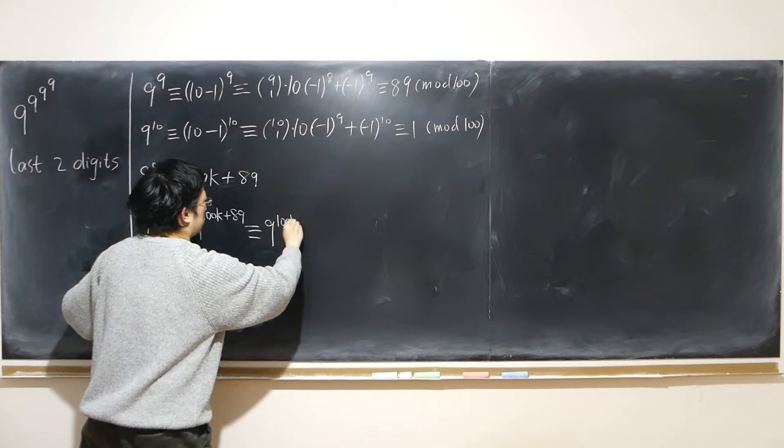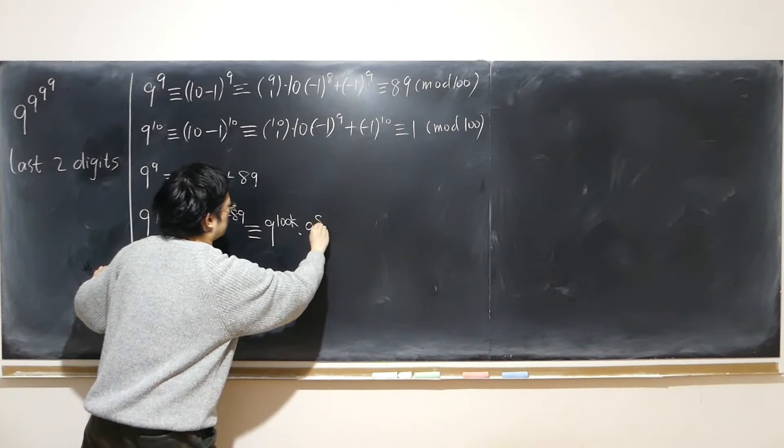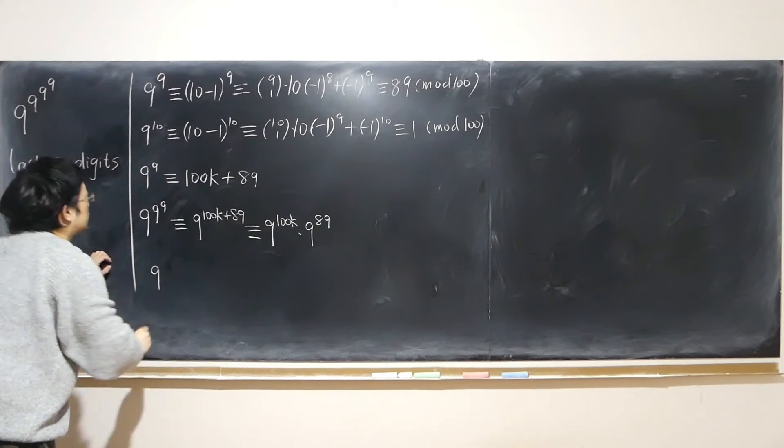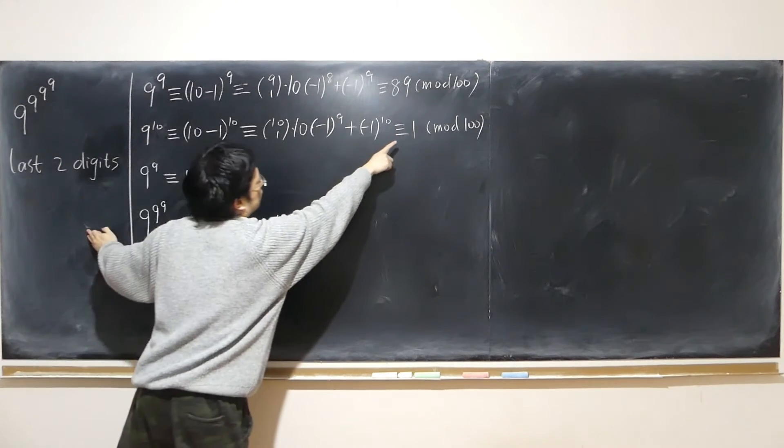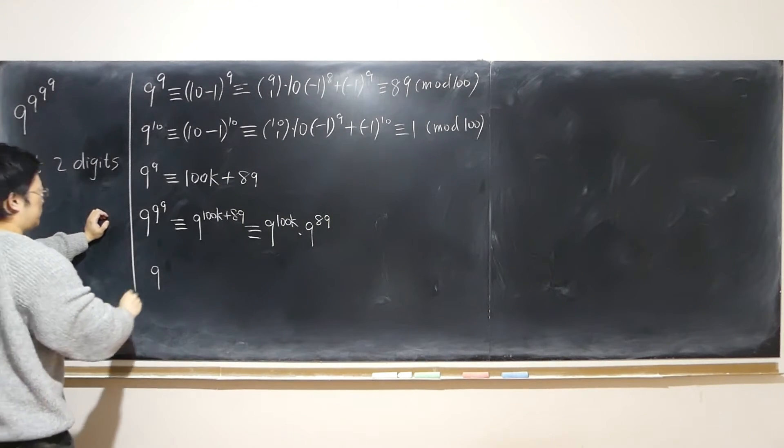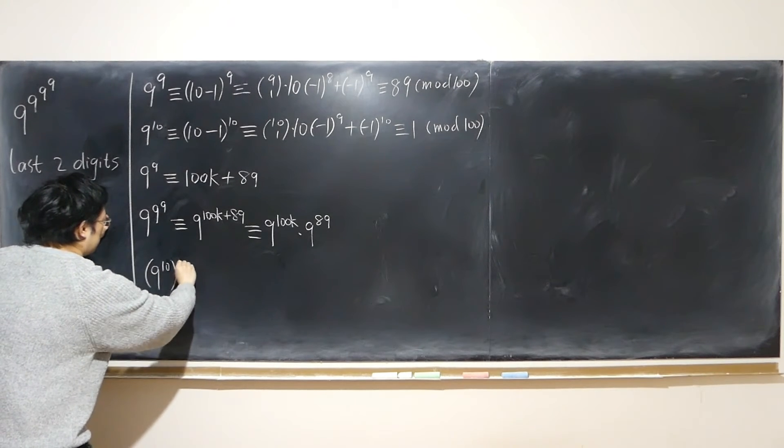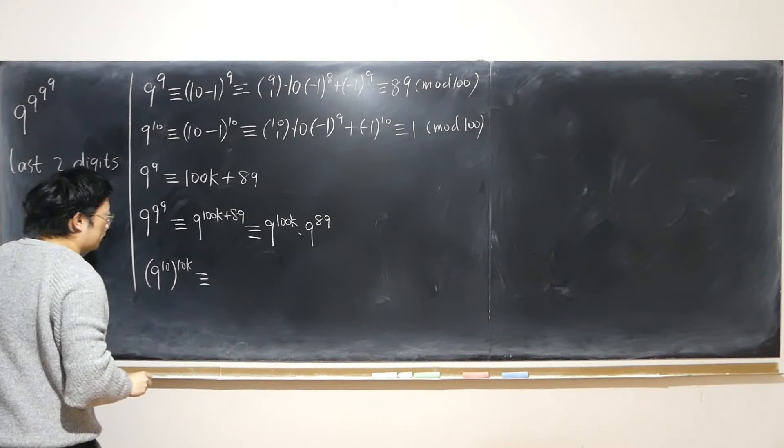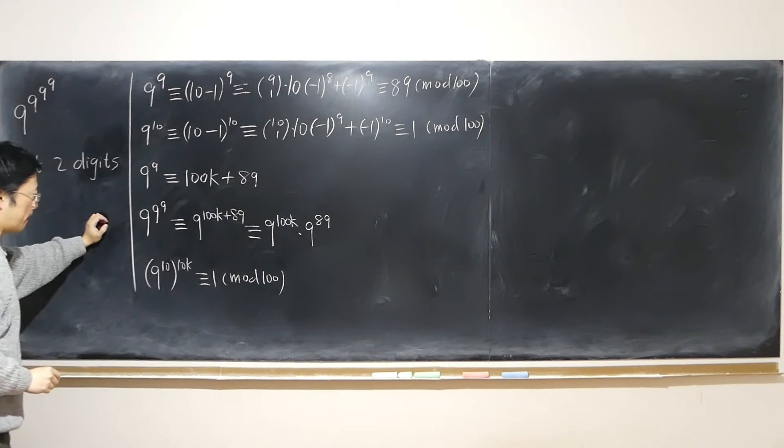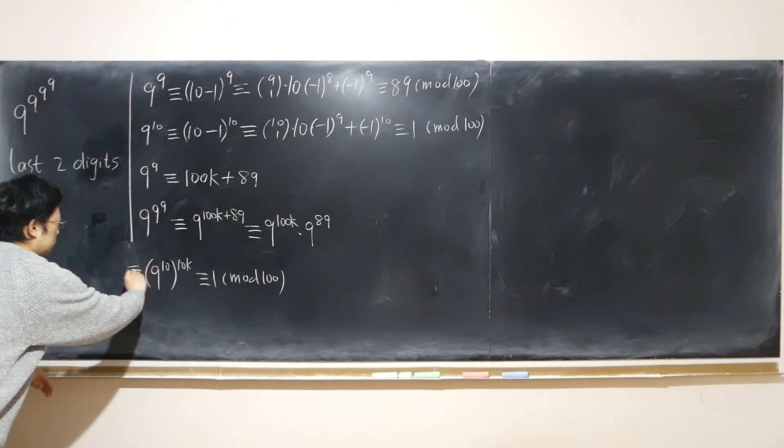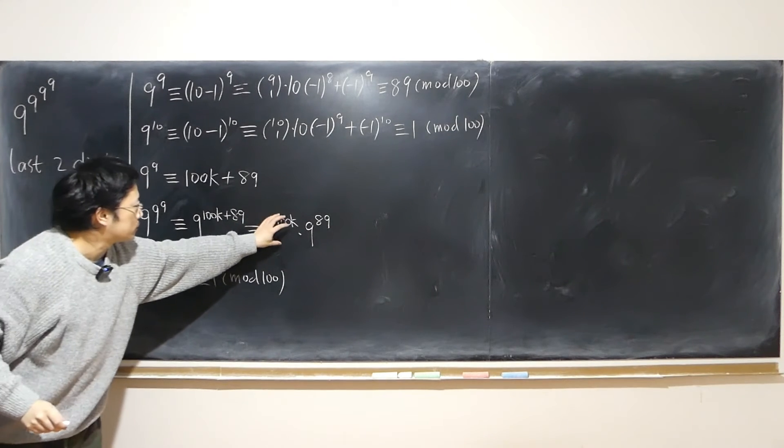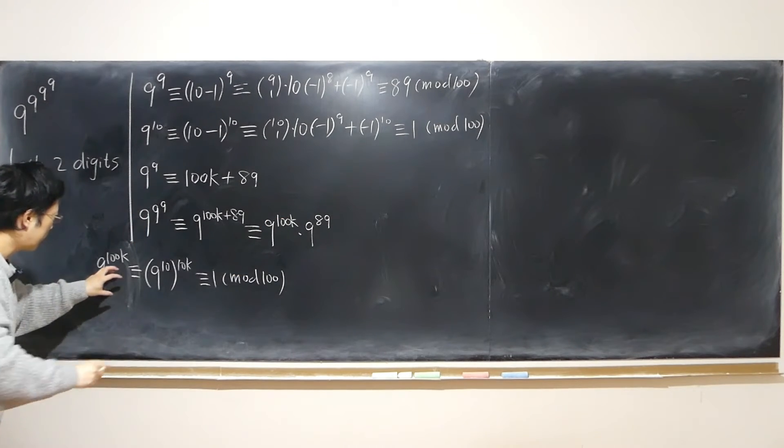That can be written into 9^(100k) times 9^89. But what's this number? Since 9^10 is congruent to 1, raised to the power of 10k on both sides, 10k, 1 raised to power 10k still 1, no problem, mod 100.